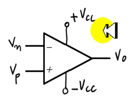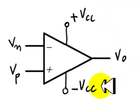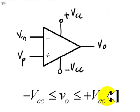We know that the output voltage cannot exceed the positive value of the power supply and cannot be less than the negative value of the power supply. Mathematically, we write it this way. The output voltage is bound by the negative and the positive values of the power supply.